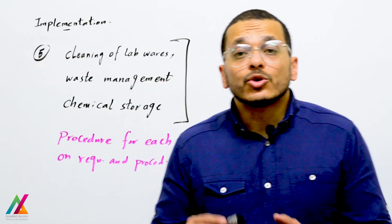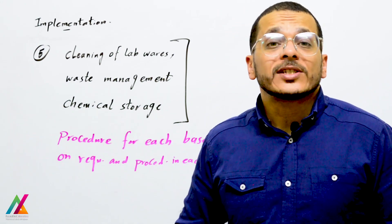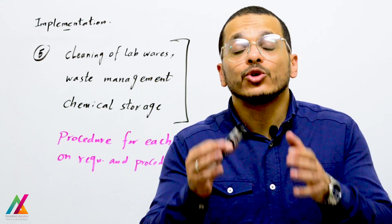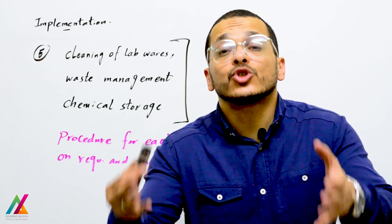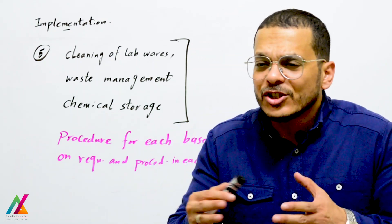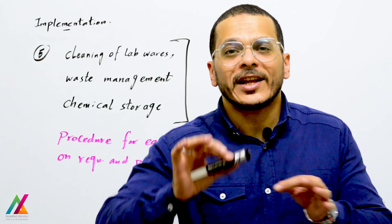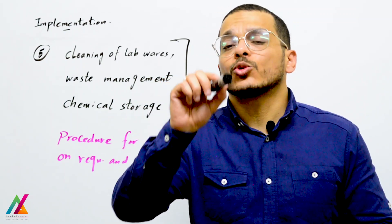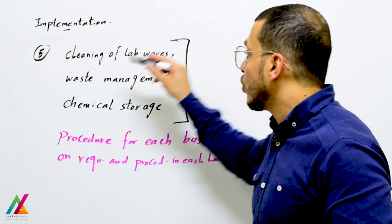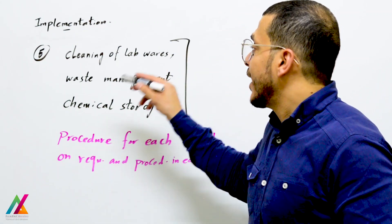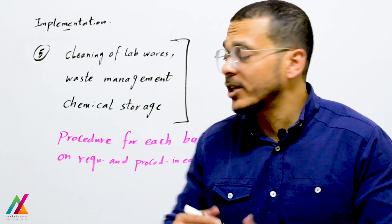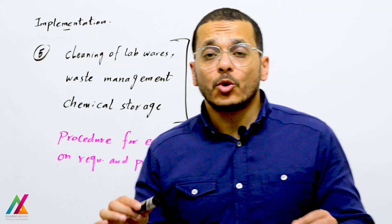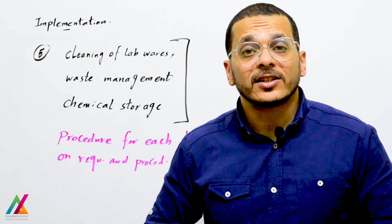However, you shall have specific procedures for cleaning of labware, waste management, and chemical storage. These will differ from lab to lab based on your activities and requirements. You should document steps for how to clean glassware, how to manage and dispose of waste, and how to store chemicals inside the lab, because all of these are important to prevent any contamination or interference with lab activities.